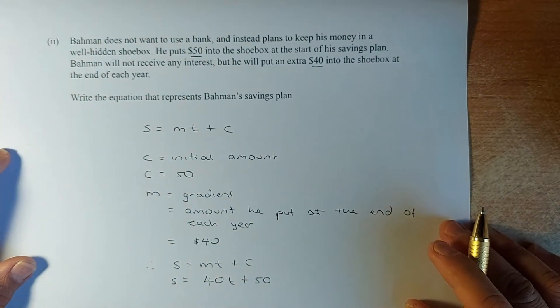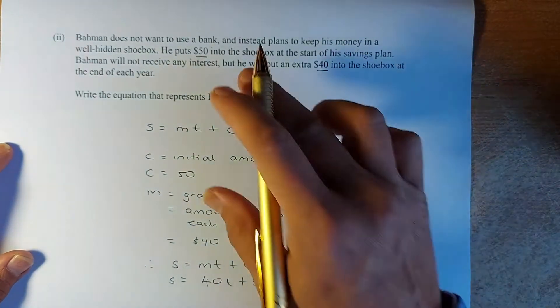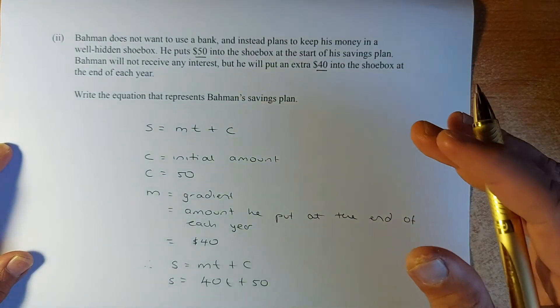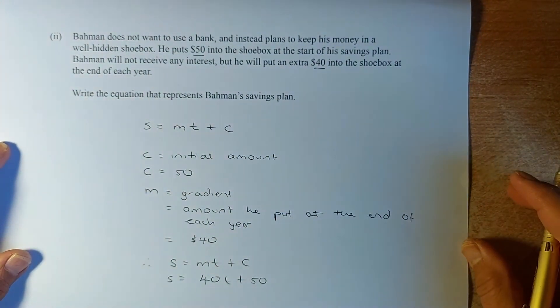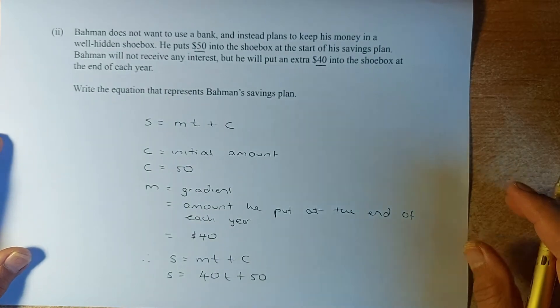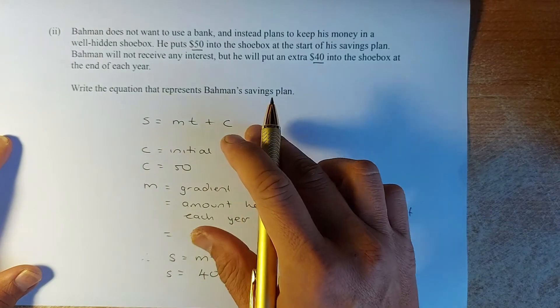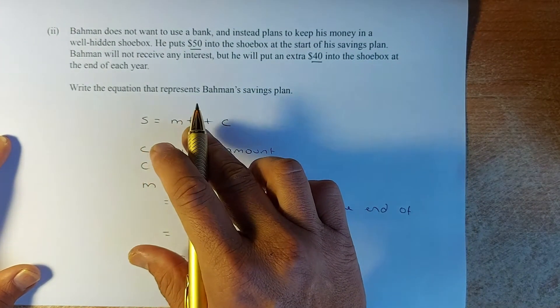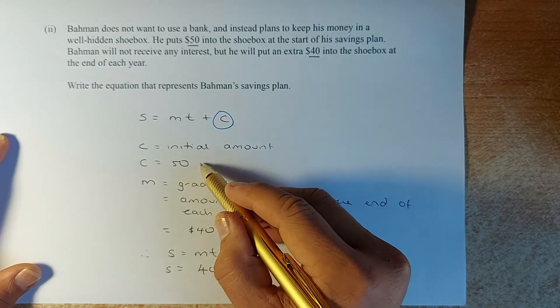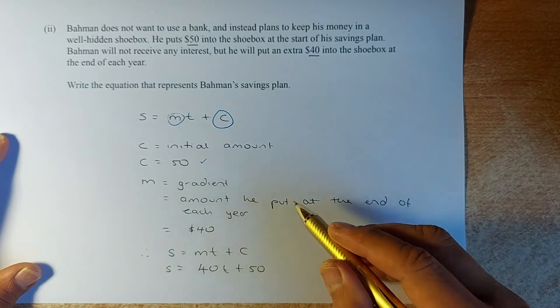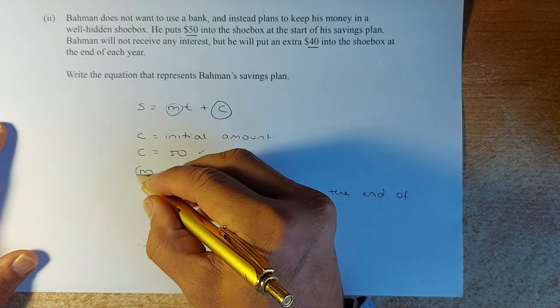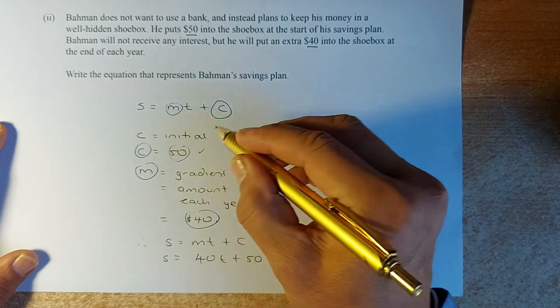The next two is a merit question. So we have done Anaru. So we are now going to Bachman. Bachman does not use the bank. And instead, he plans to keep his money in a shoebox. He put $50 in the shoebox at the start. So before he even starts, he has $50. Bachman will not receive any interest. But he will put $40 in the shoebox at the end of each year. Write the equation that represents Bachman's savings plan. So in the straight line, the equation is always y equals to mx plus c. So instead of y, we will put the savings equal to m times t plus c. So we need to calculate c, the initial amount. The initial amount is 50. So c equals to 50. Very simple. And m is the amount he is going to put. The gradient is the amount he is going to put every year.